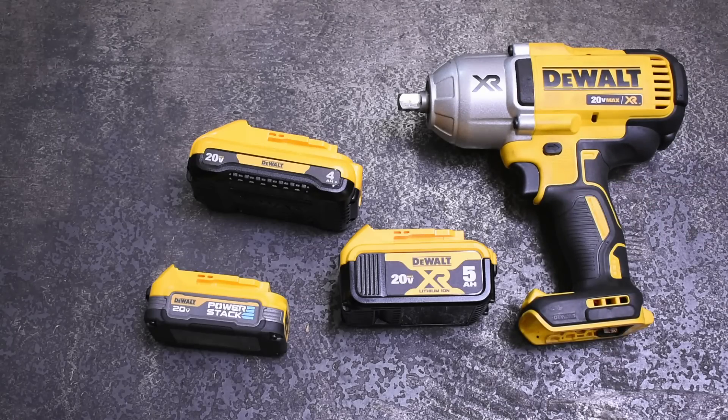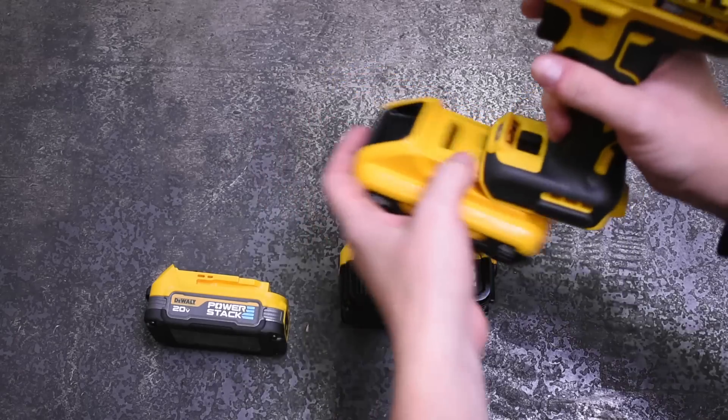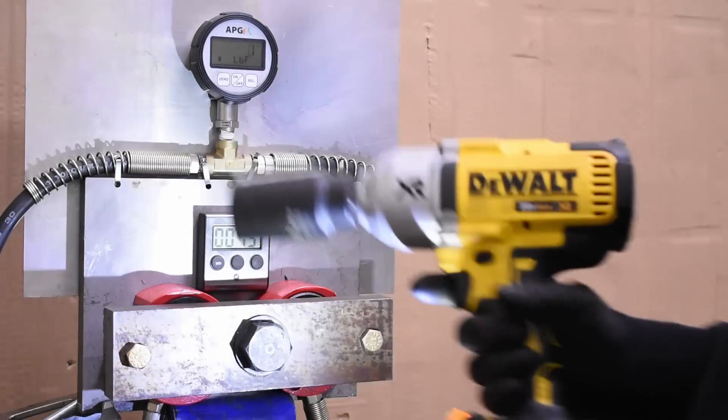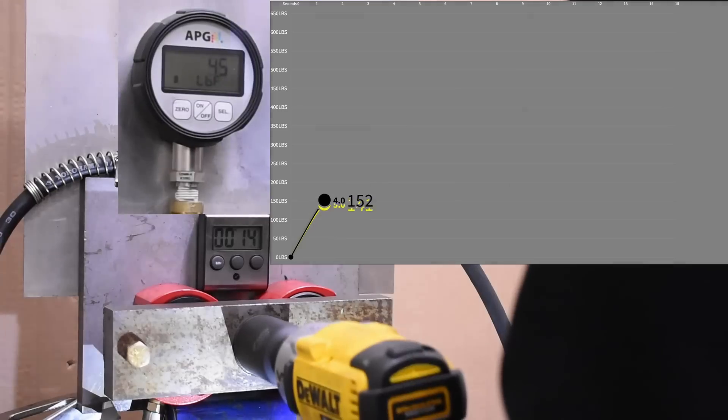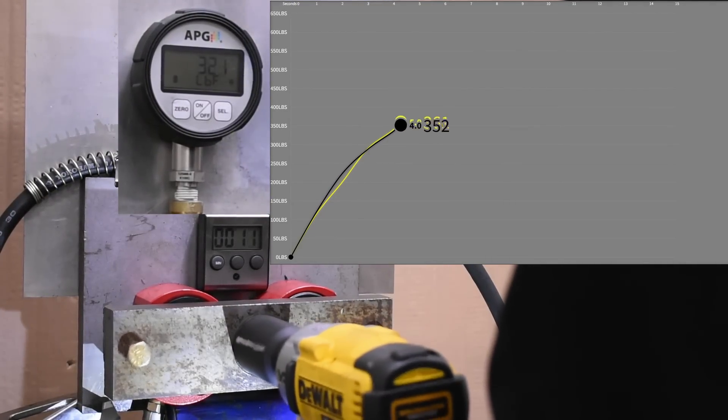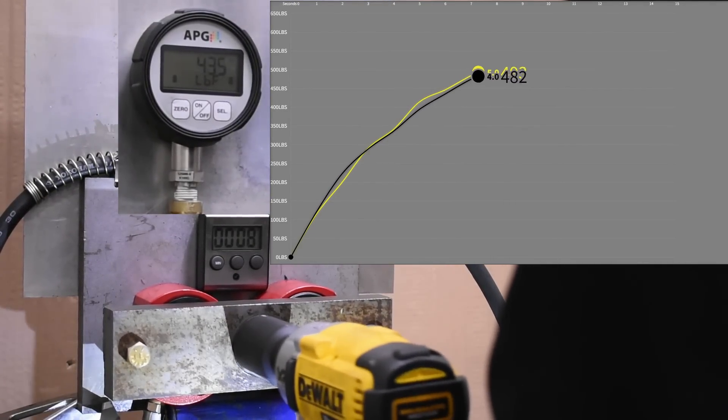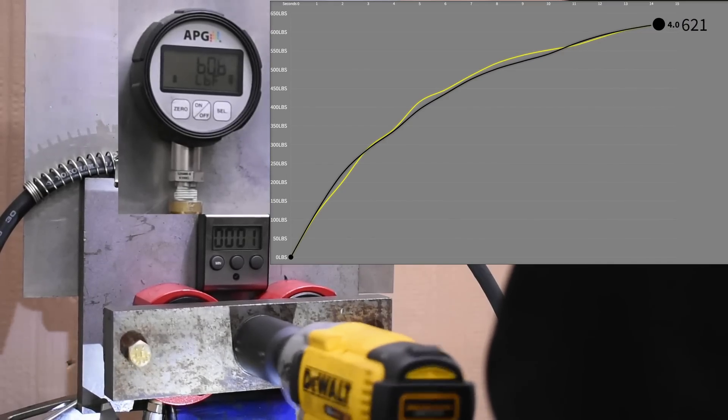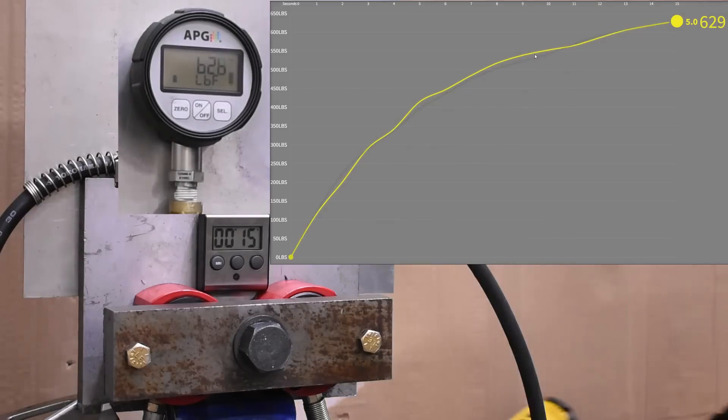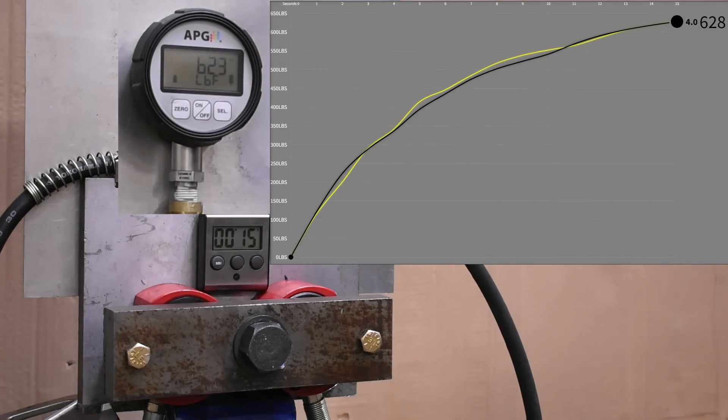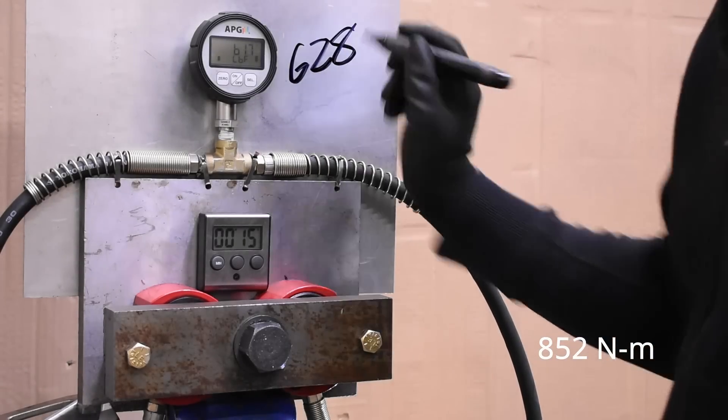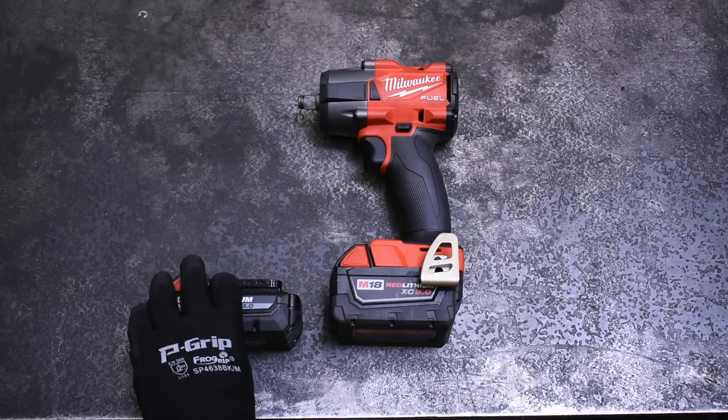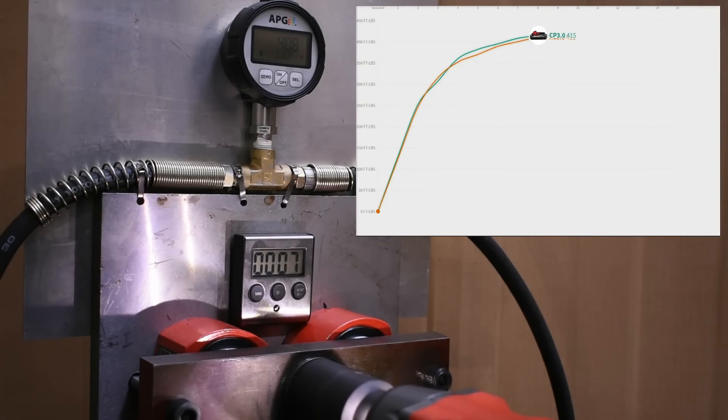Here's the DeWalt high torque, with a 4Ah 21700 cell battery, versus the 5Ah 18650 style that it came with. Very mirror-like, and only one foot pound difference at the end. This matches a lot of our testing in the past, on 1P configured 21700 cell rows versus double row 18650 packs, like the rigid 3Ah versus 6Ah, and the Milwaukee CP 3.0 versus XC 5.0. Same performance in our experience there as well.